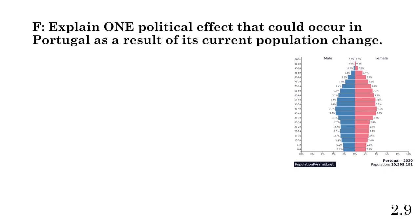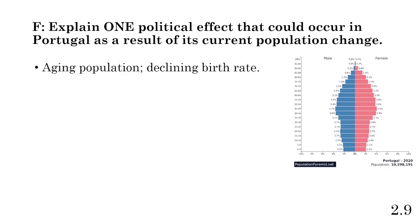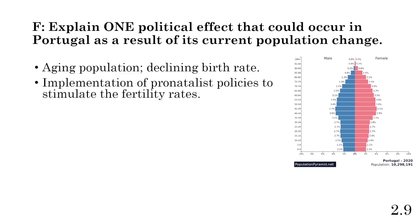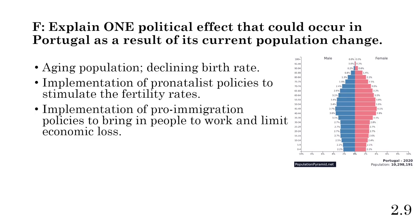Part F: explain one political effect that could occur in Portugal as a result of its current population change. We established Portugal has a declining population with a negative rate of natural increase — an aging population with more middle-aged and elderly compared to kids. With a declining birth rate, the government may implement pronatalist policies to stimulate fertility rates, such as tax breaks for having multiple kids or paid paternity leave. Pro-immigration policies could also be adopted to bring in workers and limit economic loss as the aging population retires and opens up jobs.